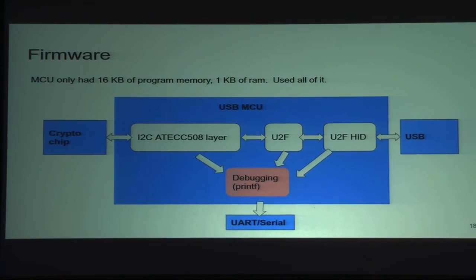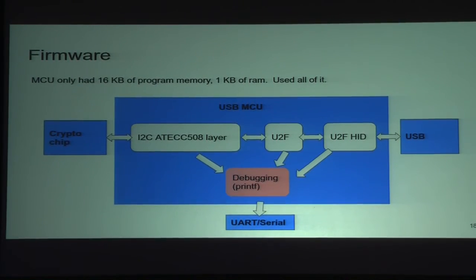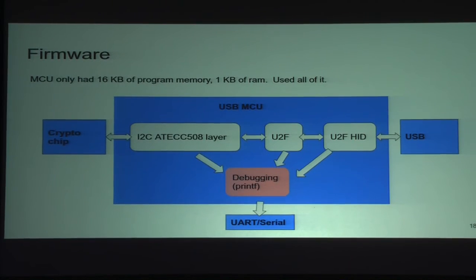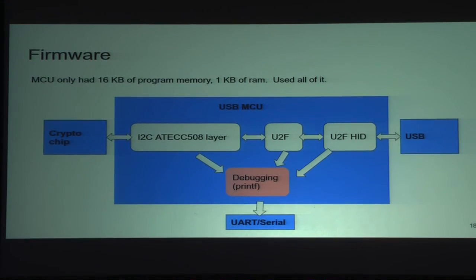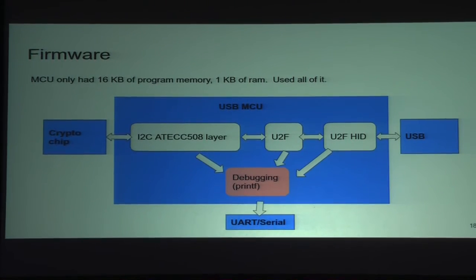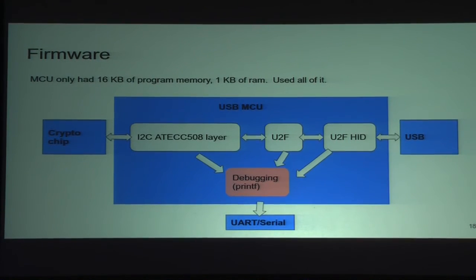The firmware follows the different layers of the FIDO spec and offloads all the heavy crypto work to the crypto chip. Since I picked the cheapest MCU, it only had 16 kilobytes of program memory and one kilobyte of RAM, which is pretty small — and I used all of it. I ran out of memory multiple times during development and had to go back and make things smaller. Development time would have been a lot quicker if I had just picked an MCU with USB and more memory.